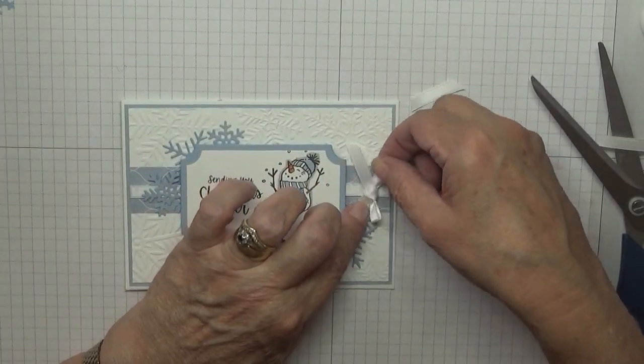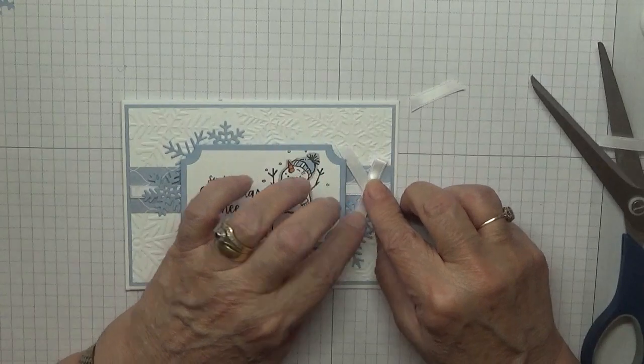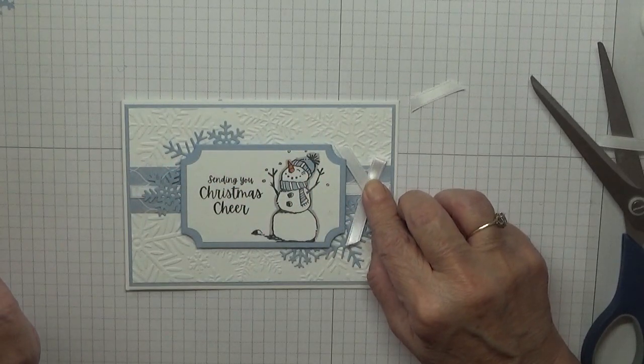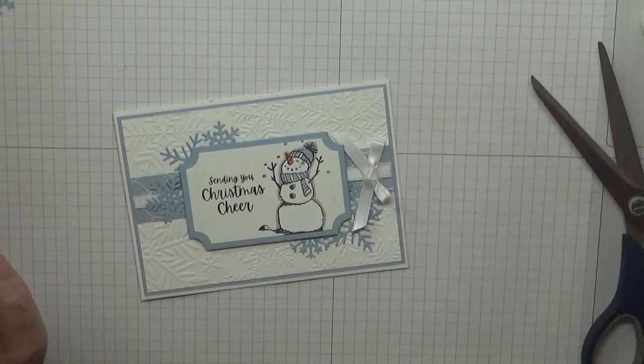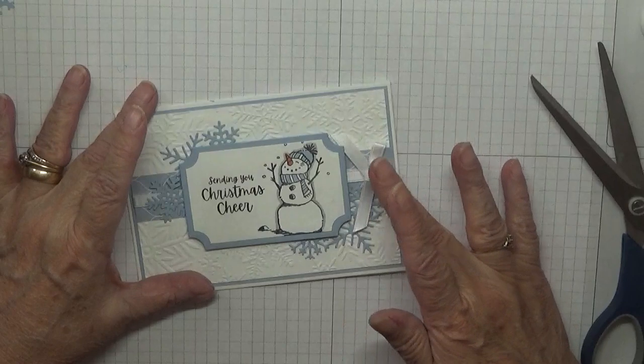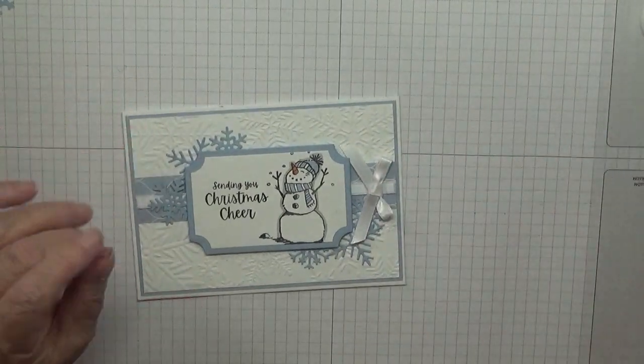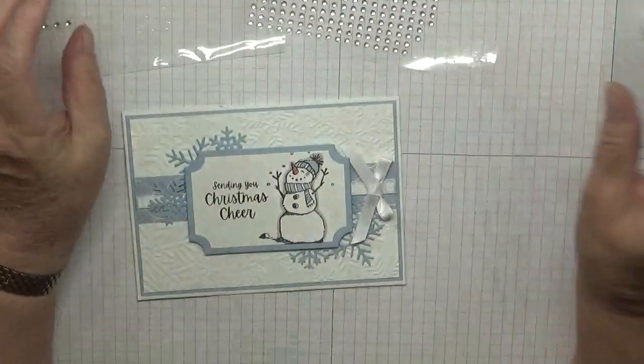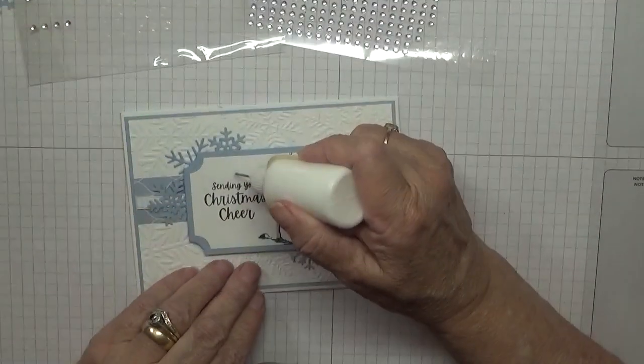I'm going to pop that there. A bit of ribbon, a bit of ribbon, a bit of glue, and hold it down. And then we need some gems. I'm only doing three.